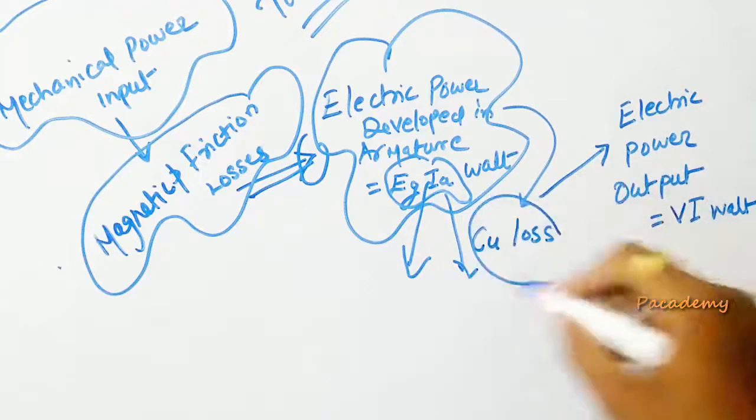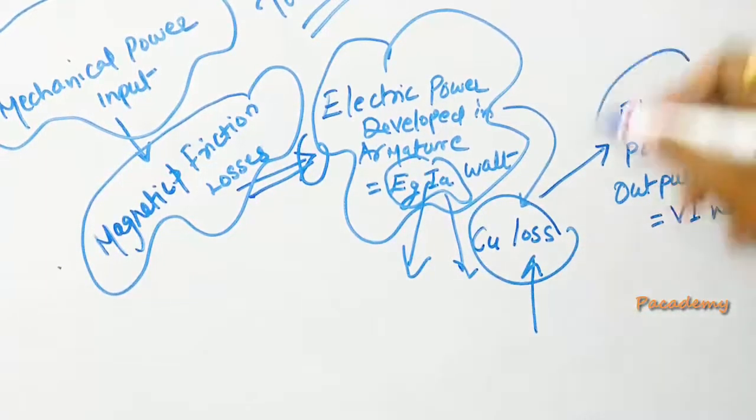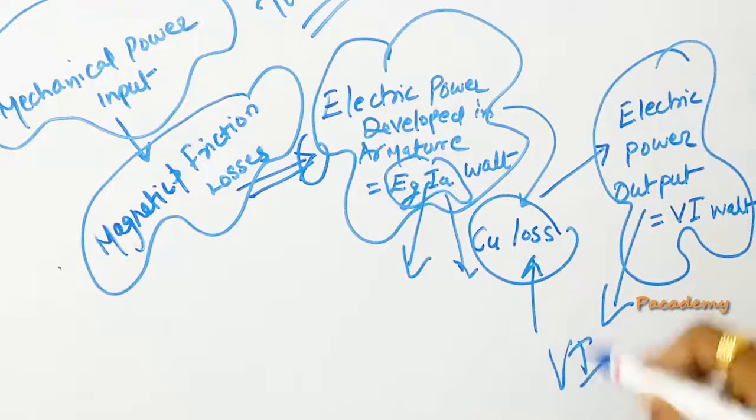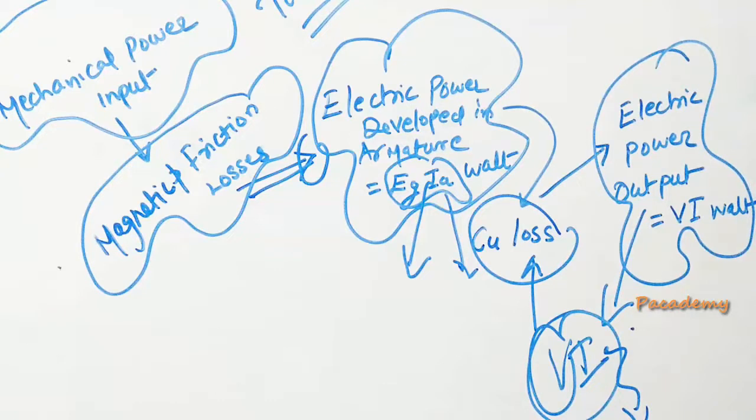After the copper losses which happen in the armature and the field windings, you get the final electrical power output which is the output power of the generator, given by VI. I is the load current and V is the terminal voltage which is available across the load. This gives the power output in watts of the generator.